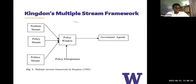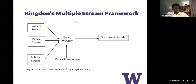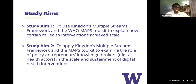Within the Kingdon's Framework, there are people called policy entrepreneurs — you can also call them knowledge brokers, actors, or champions — individuals who catalyze the convergence of the three streams. You have a problem, you have politics, you have policy, and these actors have the ability to navigate these complexities so that an intervention becomes part of a government agenda.